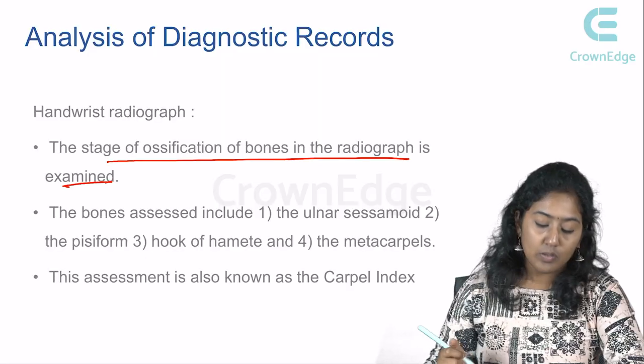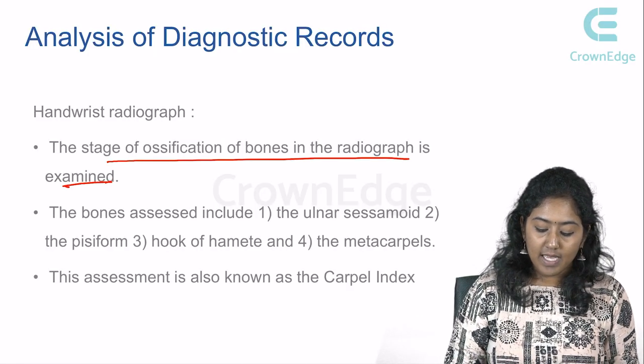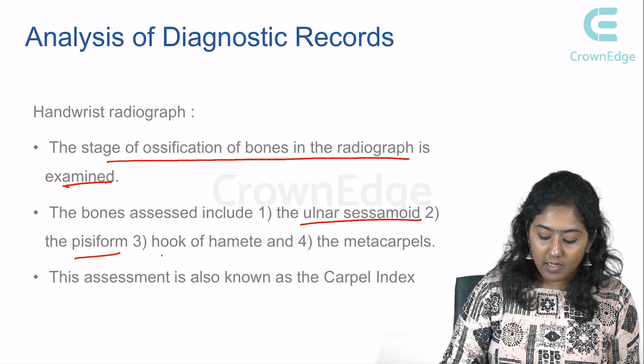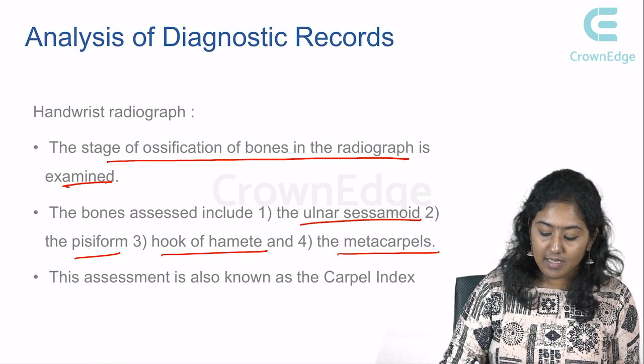Hand-wrist radiographs are essential diagnostic aids for myofunctional appliances during the growth period, helping determine how much growth remains. For example, a 13–14 year old female — you don't know if she's reached puberty or pre-pubertal growth spurt. If still in growth, you can plan appliance timing accordingly. The bones assessed include the ulnar sesamoid, the pisiform, the hook of the hamate, and the metacarpals — this assessment is known as the carpal index.